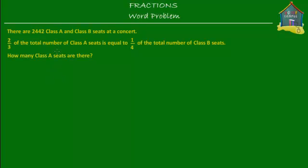Welcome to HomeCampus.com.sg. Here's a word problem. There are 2,442 Class A and Class B seats at a concert. Two-thirds of the total number of Class A seats is equal to one-quarter of the total number of Class B seats. How many Class A seats are there?